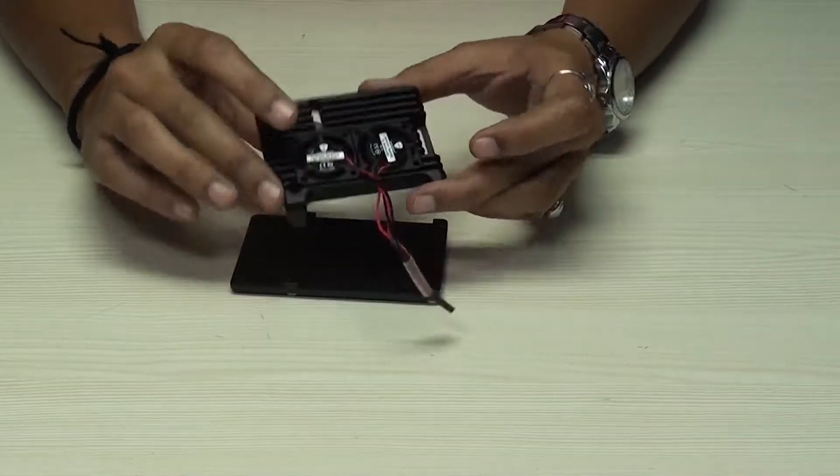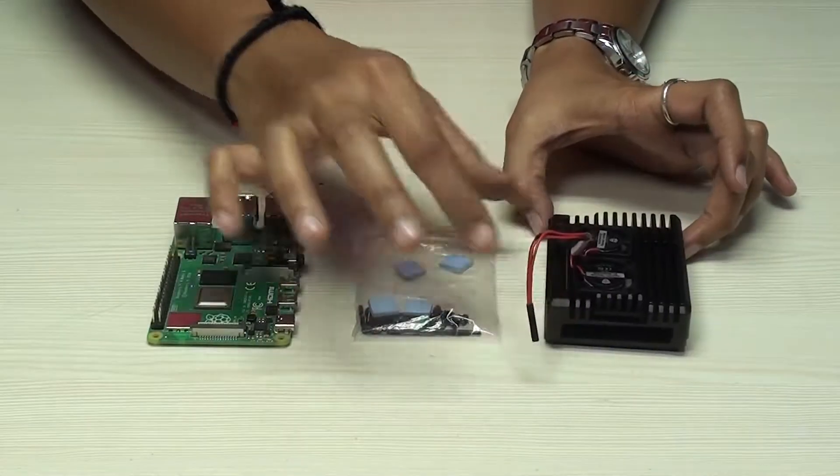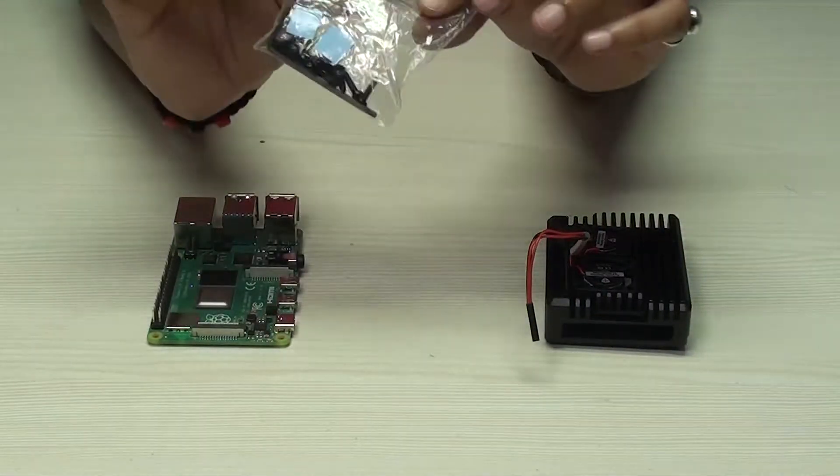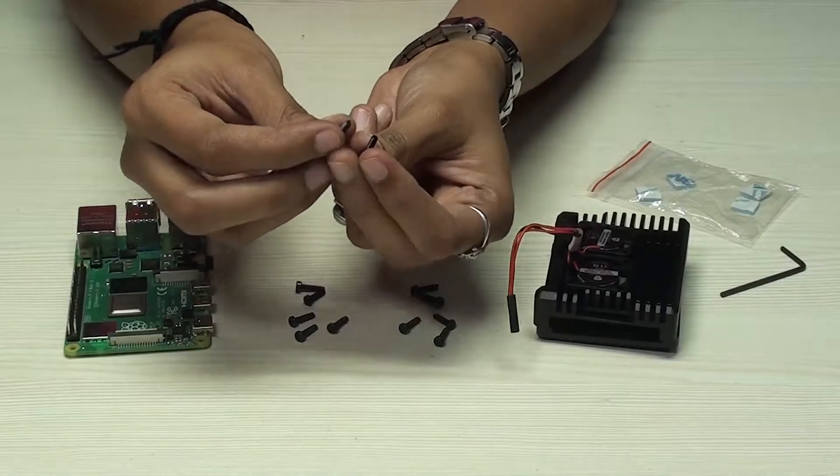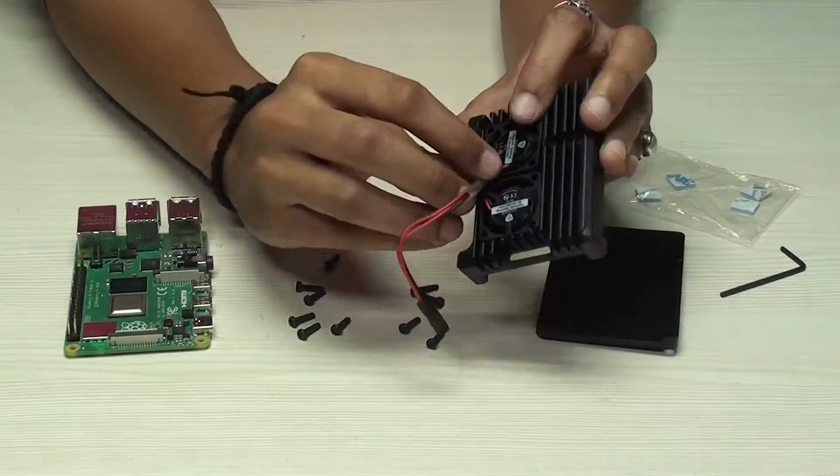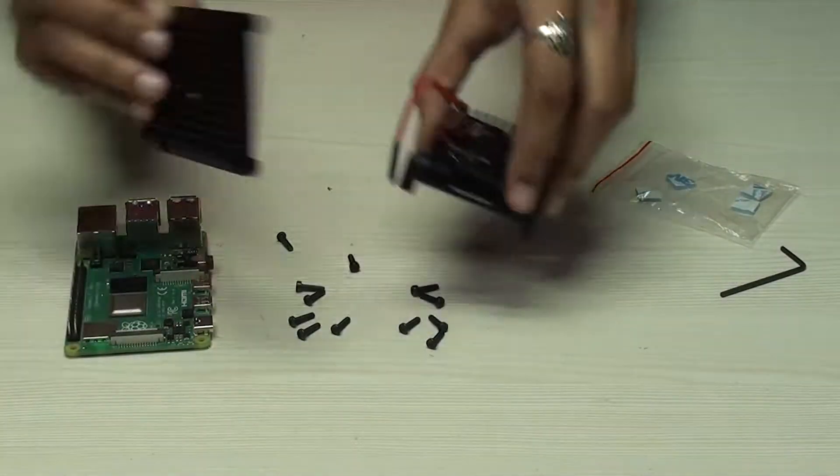Now let's move on towards assembling heatsinks with fans on Raspberry Pi 4. The heatsink with fan also comes with the required thermal tapes, allen key, and bolts. This casing requires two types of bolts: one for connecting the fans and another for connecting the case with the Raspberry Pi.